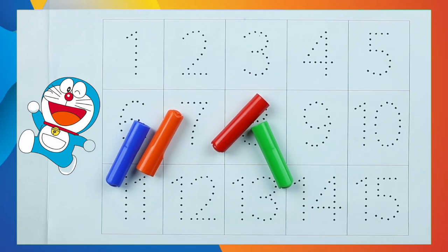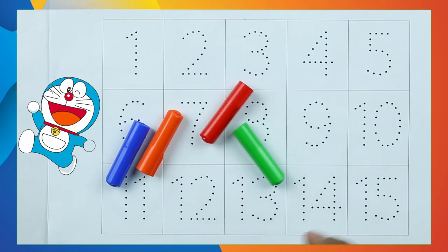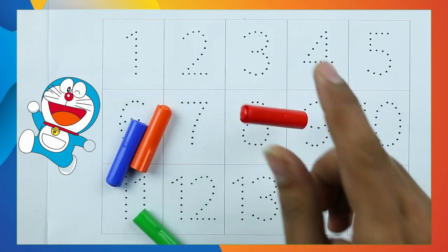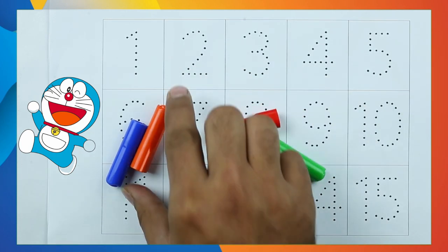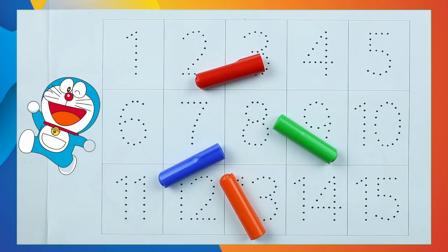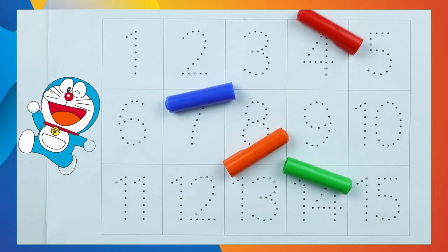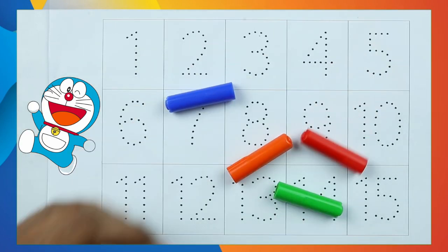Hello friends! Today we learn numbers 1 to 15 with some colors: green color, red color, orange color, blue color. Let's start.